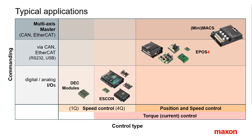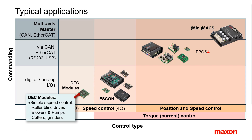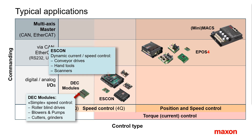As a summary, what are typical application fields for the Maxon controllers? The DEC is a simple speed controller, typically used for applications such as roller blind drives, blowers and pumps, or cutting and grinding devices. The ESCON is a very versatile dynamic current and speed controller, used when requirements for control performance are higher — as in conveyor belts, all kinds of handheld tools, and scanners.